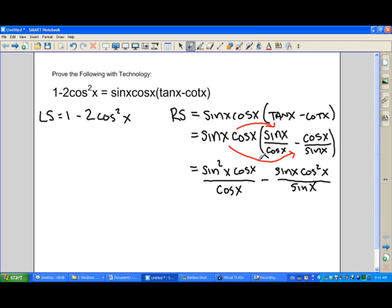Now there's terms that I can cancel. Cosine in the numerator and the denominator of the first term can cancel. The sine in the numerator and denominator of the second term can cancel.